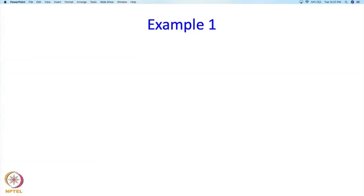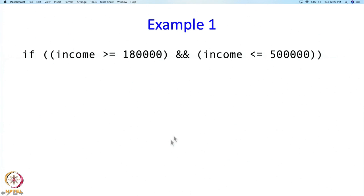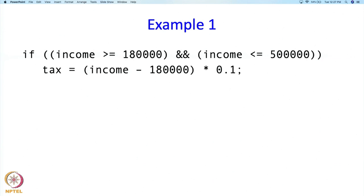Let us take an example. I can write: if income > 180000 && income < 500000, do something — specifically, tax = (income - 180000) * 0.1, which is 10% of the excess of income over 180,000. So when will this tax assignment statement be executed?